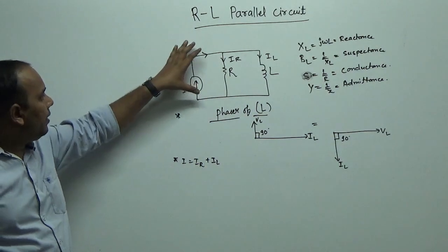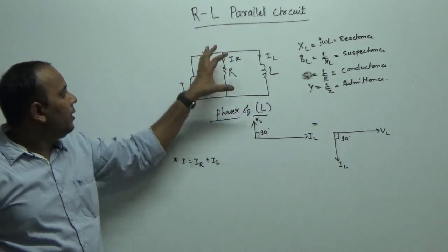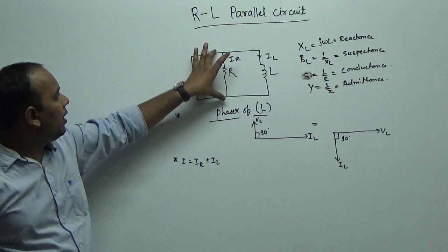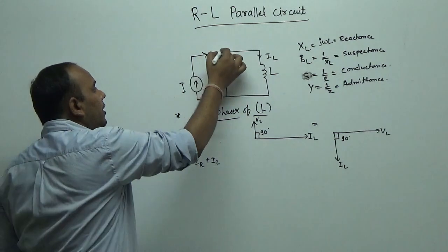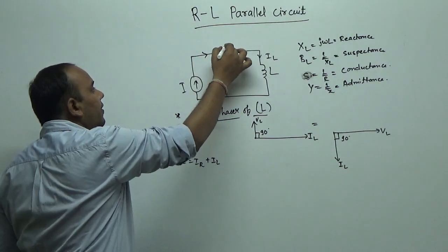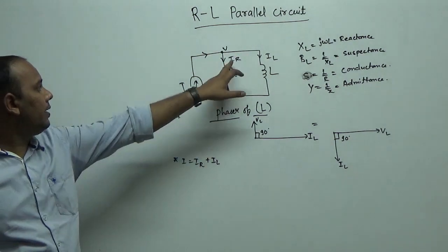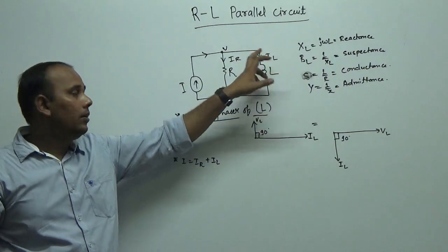In a parallel circuit, voltage will be the same across both R and L, so we take it as V. The current is different in each branch, as IR and IL.